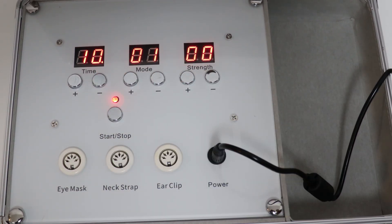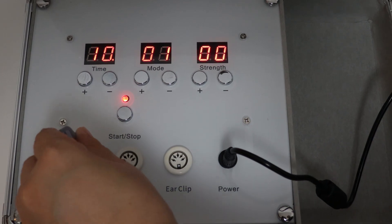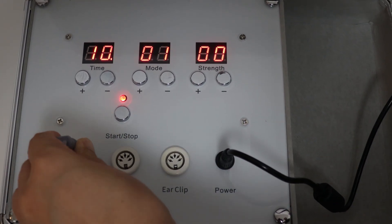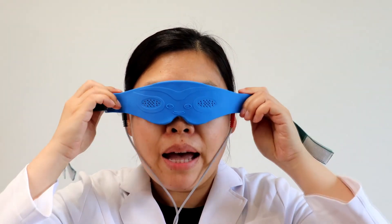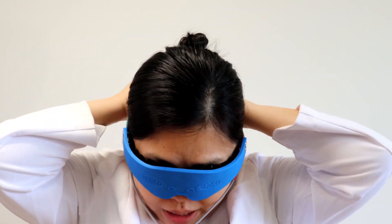Part 1. For the first 10 minutes, connect the eye mask to the appropriate connector. Then wear the eye mask, placing it directly over your eyes.